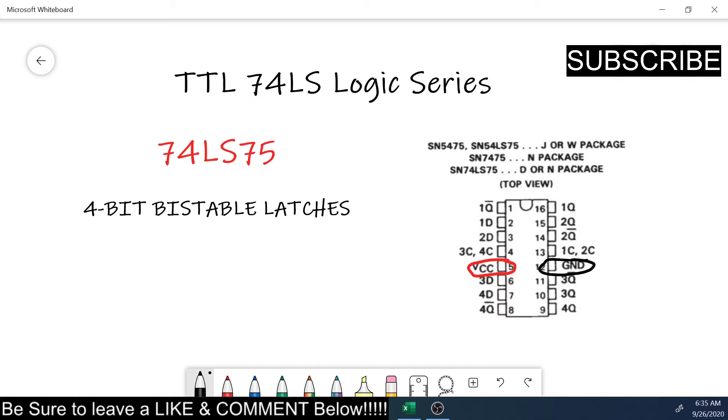Now you have a set of inputs. Right here is your first set of two bistable latches, and they're controlled by pin 13. And then you have pin 4, and this section of the chip that controls 3 and 4. So the reason I did just the two is to hook up the 13 which controls both latches.